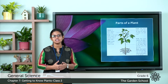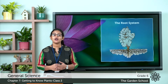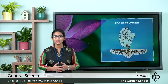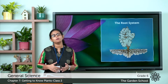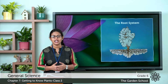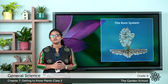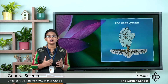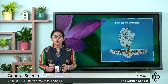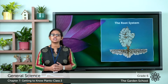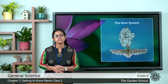Today we are going to discuss the root system of the plant. Most plants have roots that grow in the soil — they grow below the soil. And these roots perform two main functions. The first one is it holds the plant firmly to the soil.